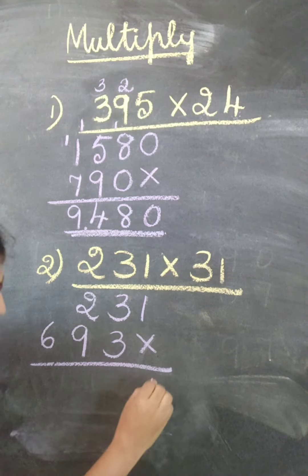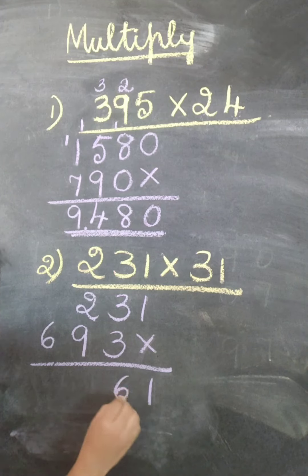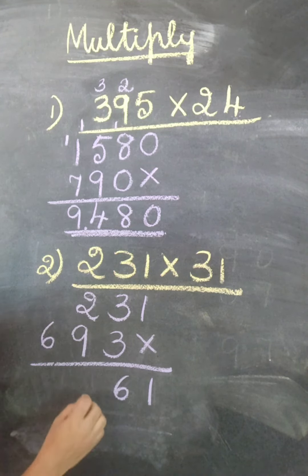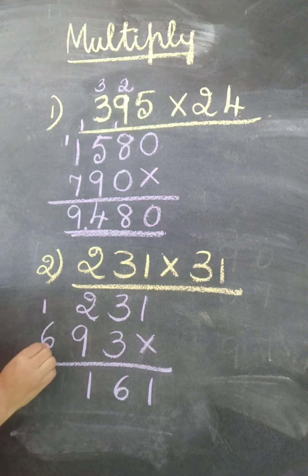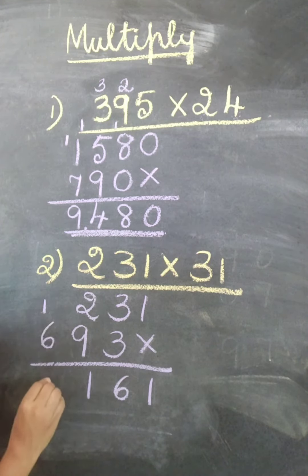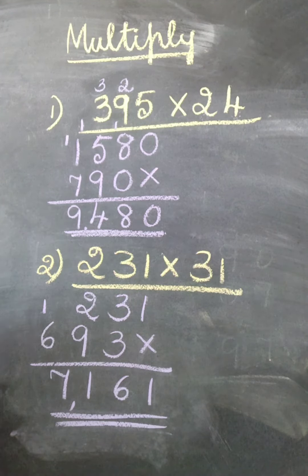Let us add. 1. 3 plus 3 is 6. 2 plus 9 is 11, 1 carry on. 6 plus 1. 6 plus 1 is 7. So the answer is 7,161.